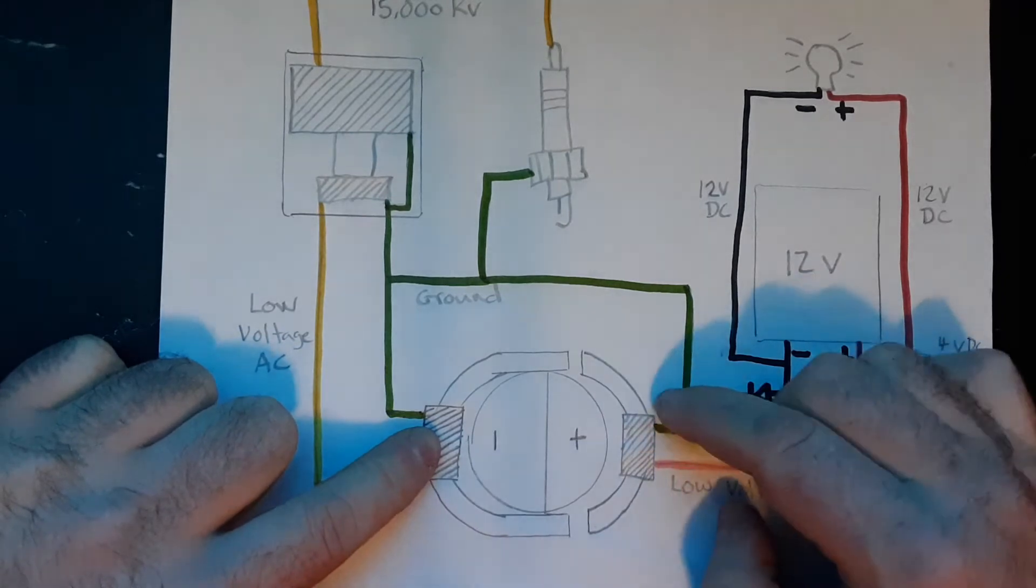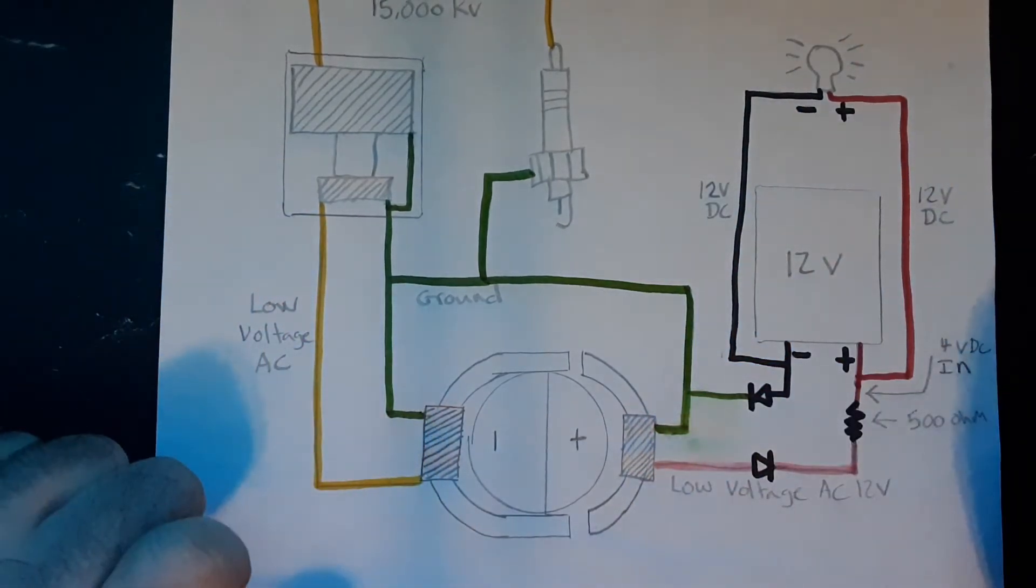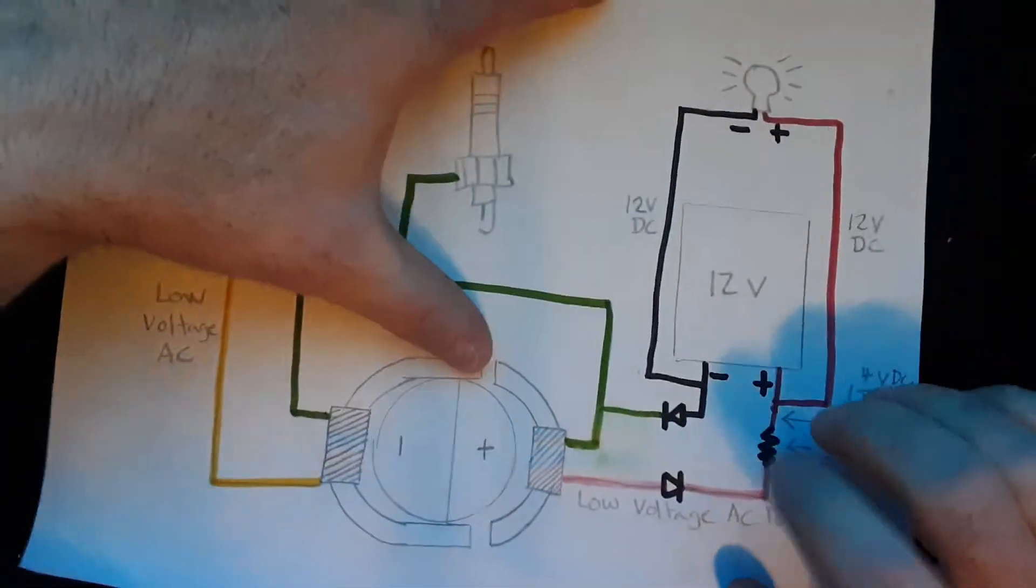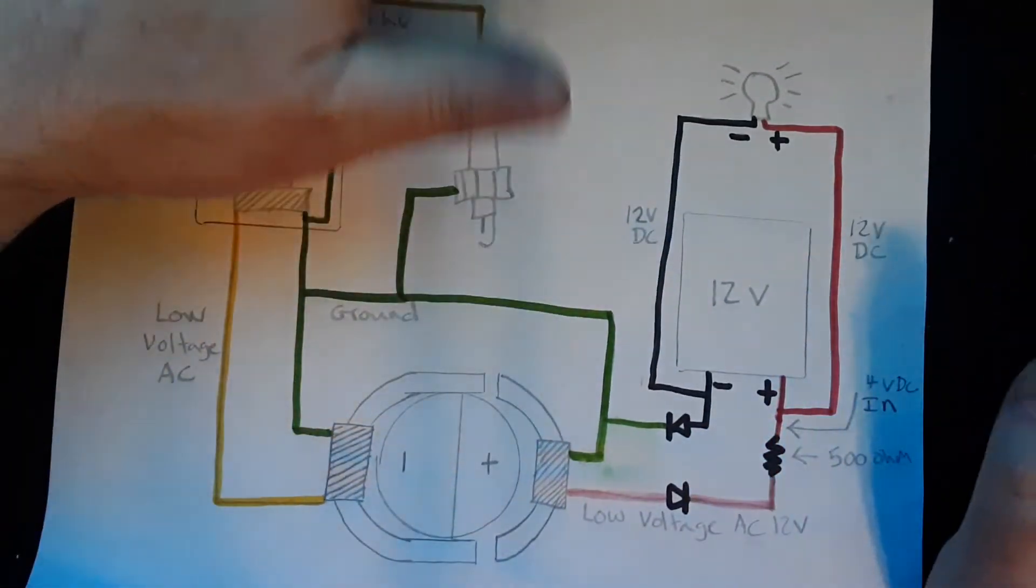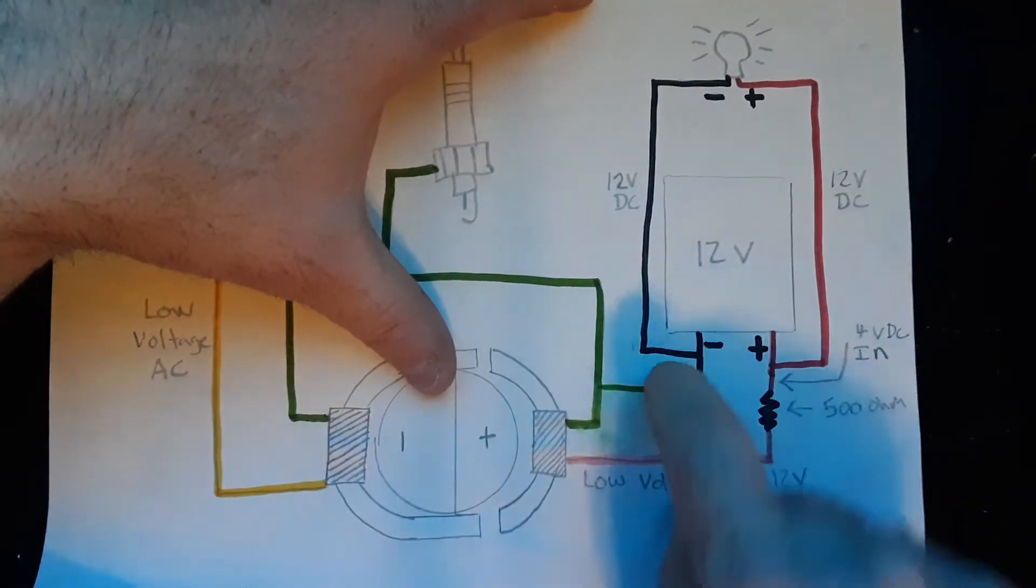If you have it wired like this where the two coils are matched so that they're both alternating current in harmony, if you have it flipped where this one's here and that one's there, it's going to kill itself every time. It's going to create resistance.